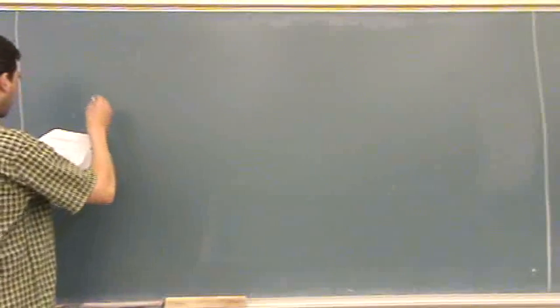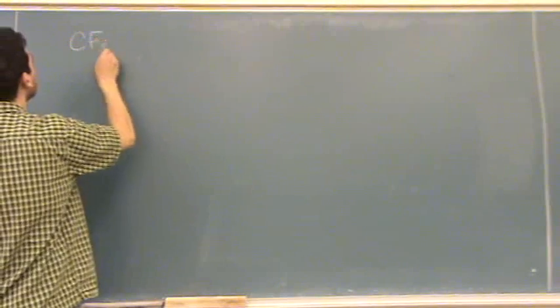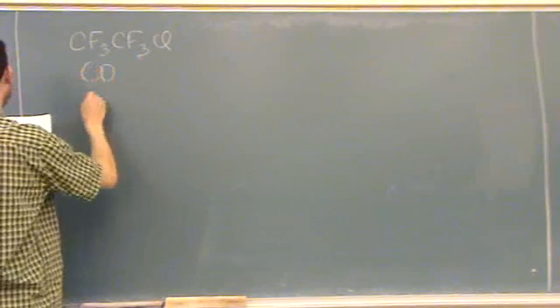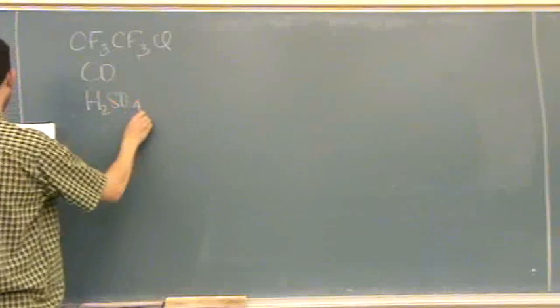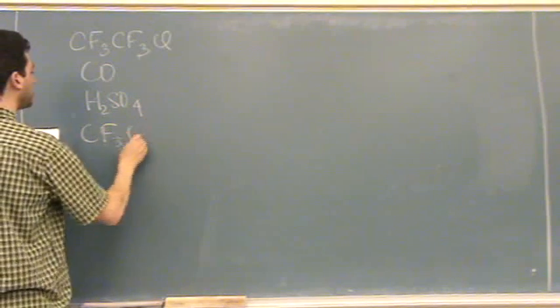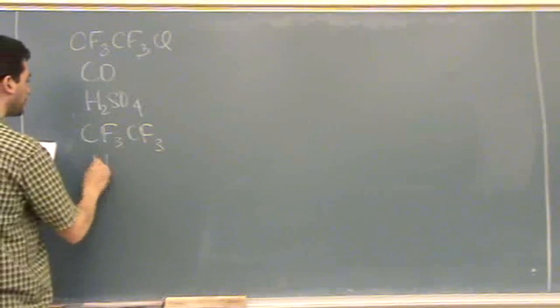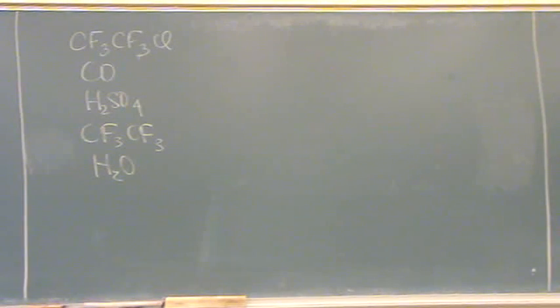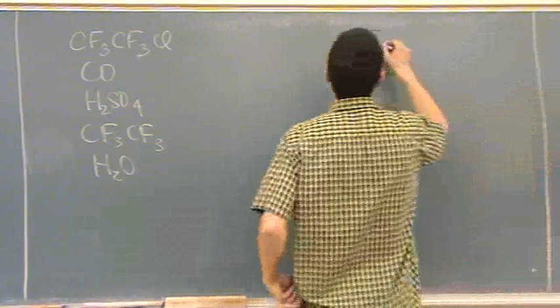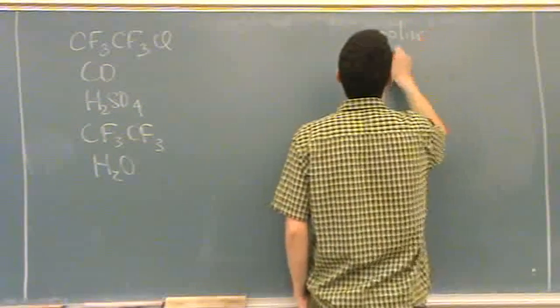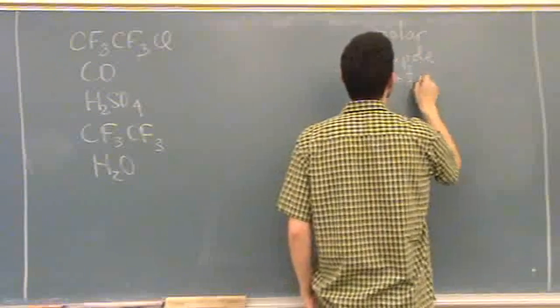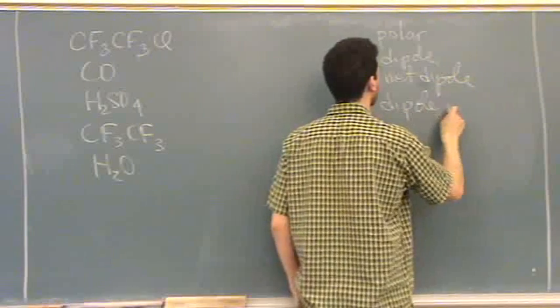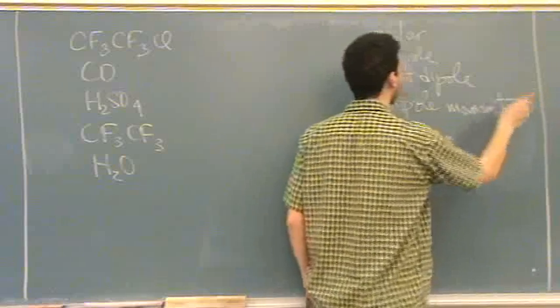It has a list of molecules here: CF2ClCF3, CO, H2SO4, CF3CF3, and H2O. And the question is, which one has the smallest dipole moment? So polar, dipole, net dipole, and dipole moment mean the same thing.